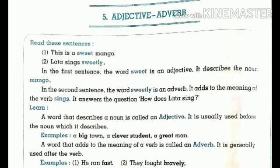First of all, I'll read this box. First sentence: 'This is sweet mango.' Second sentence: 'Lata sings sweetly.' In the first sentence, the word 'sweet' is an adjective. It describes the noun 'mango.' So in the first sentence, 'sweet' is our adjective.